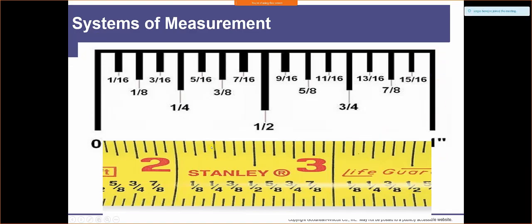Get familiar with this. Different tape measures will have different markings. If you need to be very precise, you can get one marked in thirty-seconds — there would be a line between the sixteenth and the standard zero. I personally don't think you need that much precision. Very rarely do you need to be that precise. That's our standard system of measurement.